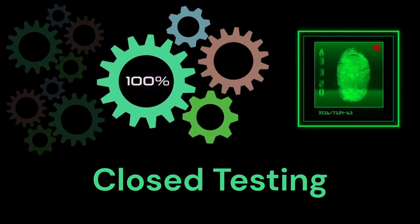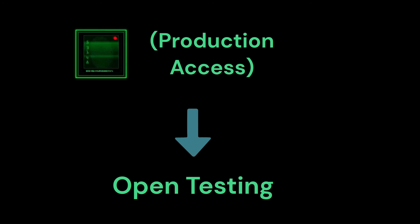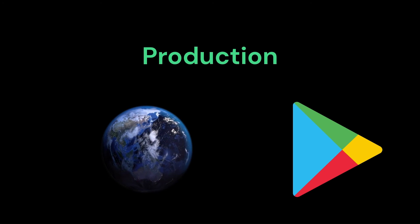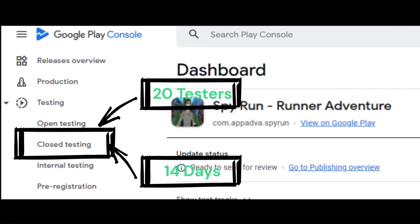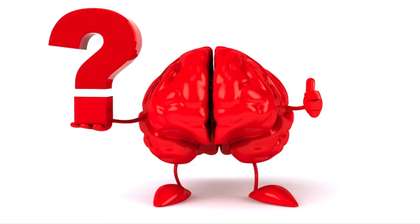Open testing track: the purpose is to surface your app's test version on Google Play. Anyone can join your test and submit private feedback to you. You must have gained production access to access open testing. Production track: the purpose is to make your app available to billions of users on Google Play. Before you can apply for production access, you must run a closed test with at least 20 opted-in testers for 14 days. Once you've met the criteria, you will be able to apply for production access by answering some questions about your testing, your app, and its production readiness in Play Console.